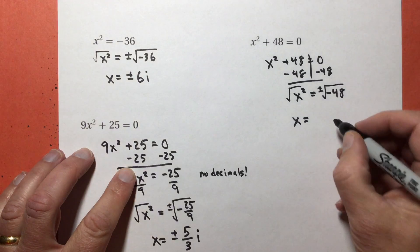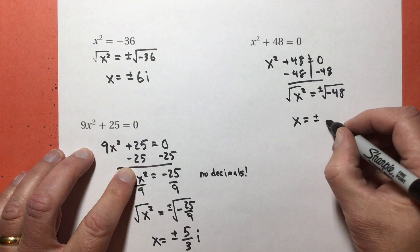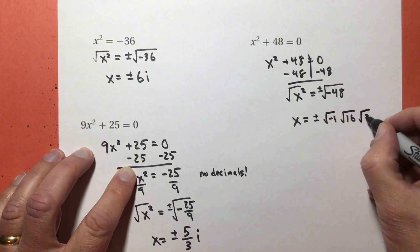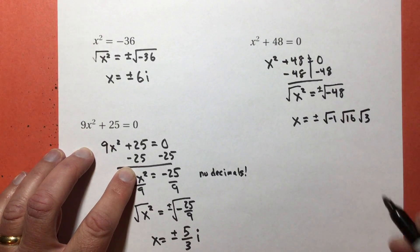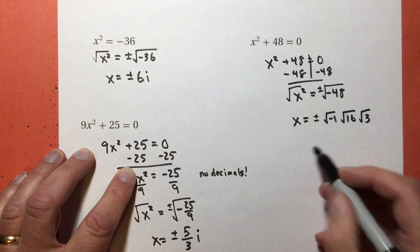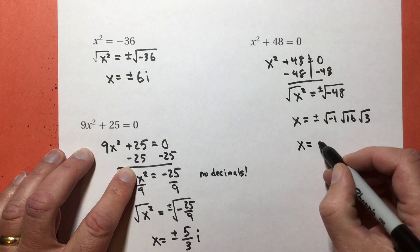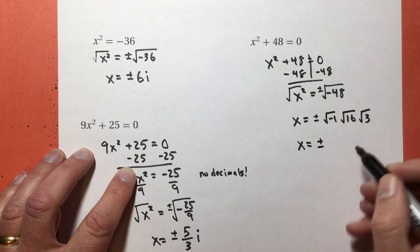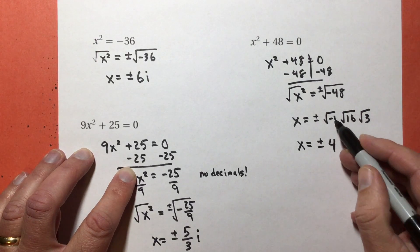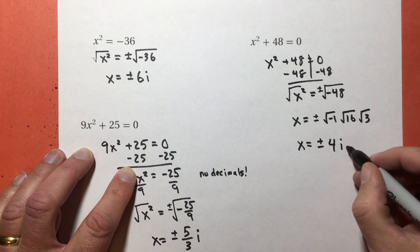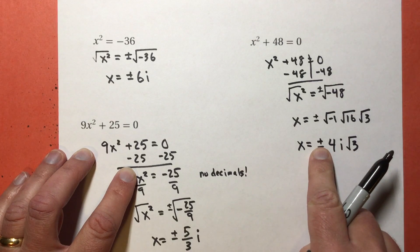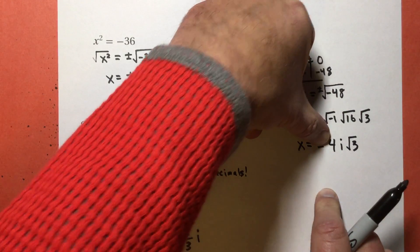So what I'm gonna get is plus or minus the square root of -1 times the square root of 16 times the square root of 3. This is i, this is 4, and this is just the square root of 3. So the way I'm gonna write my solution, first but properly, two of them, one's positive one negative: square root of 16 is 4, the square root of -1 is i, and the square root of 3 is just square root of 3. And that's two of them, positive 4i√3 and negative 4i√3.